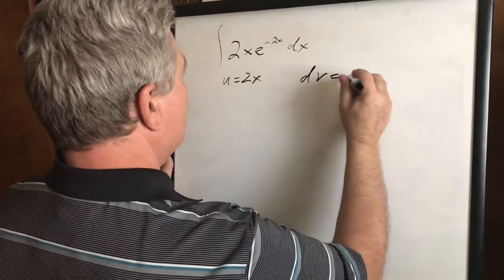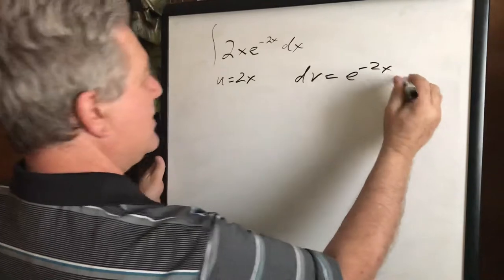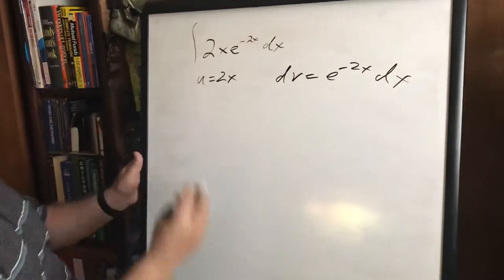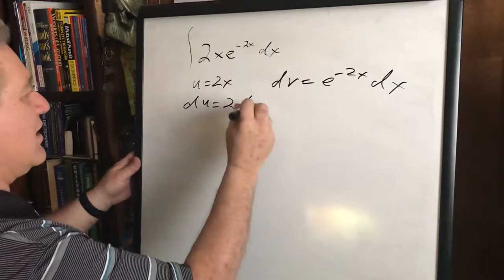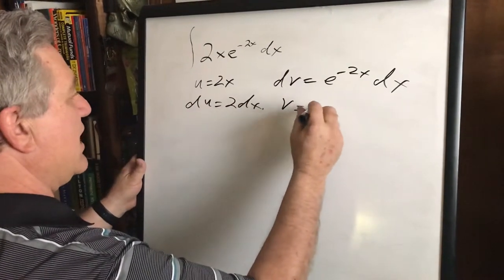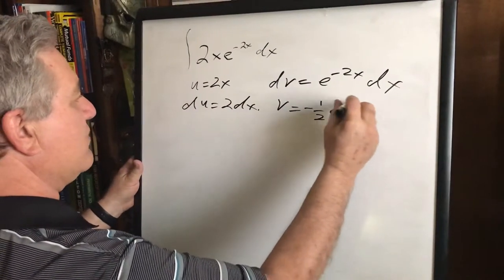Dv equals e to the negative 2x dx. And then du equals 2 dx. V equals negative one half e to the negative 2x.